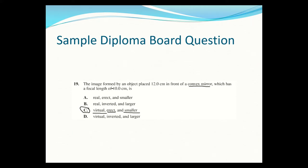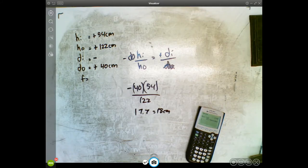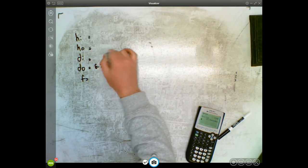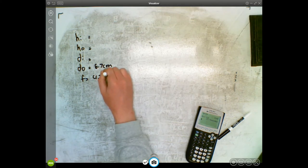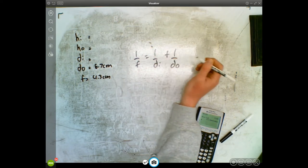Now for this next question, the object is upside down but that doesn't change anything. What's a little tricky is the distance from the object to the focal point is 2.4 centimeters, and the focal length is 4.3 centimeters. We always want to measure our distance to the mirror, so we add those together: 2.4 + 4.3 = 6.7 centimeters — that's the distance of our object. The focal length is 4.3 centimeters.